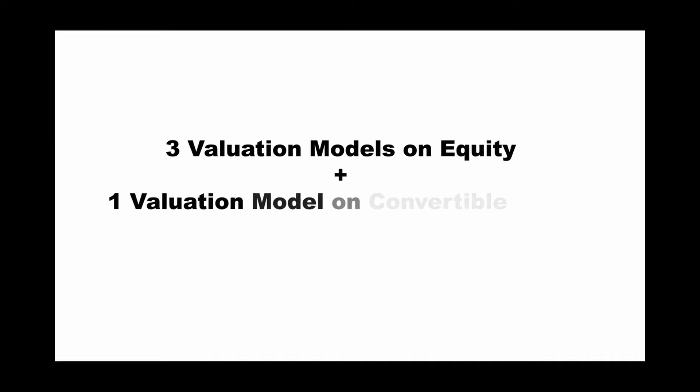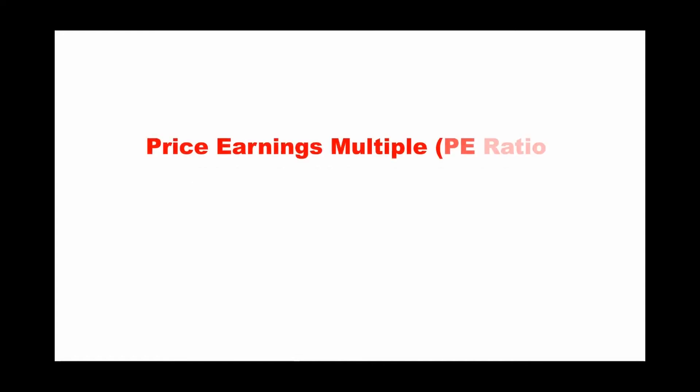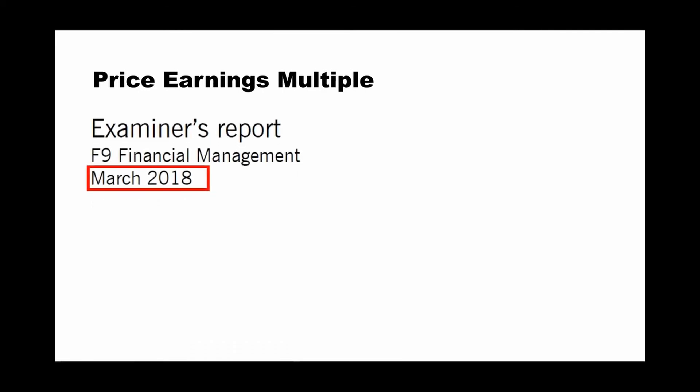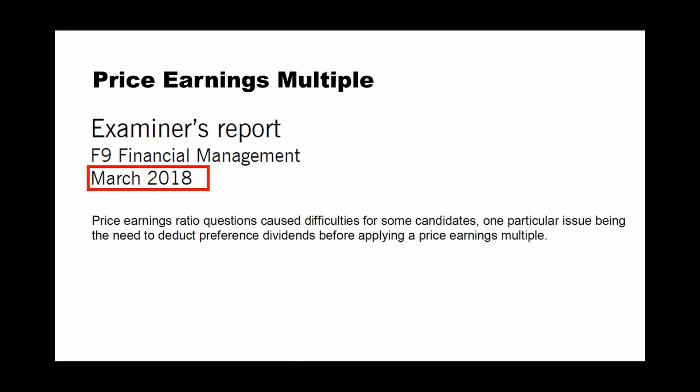The second major area is business valuation. Remember the 3-plus-1 framework: three valuation models for equity and one valuation model for convertible loans. The first equity valuation model is the price earnings (PE) multiple — an income-based model. A common error found in the examiner's report is that many students forget to deduct preference share dividends when working out the PE multiple.